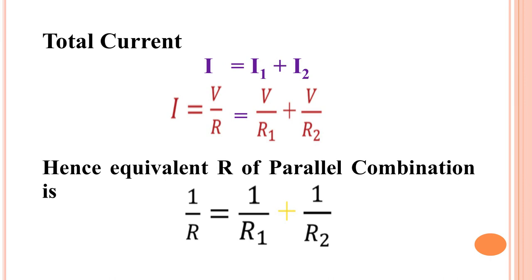To find the equivalent resistance, the total current I = V / R_equivalent, and since I = I1 + I2, where I1 = V/R1 and I2 = V/R2, we get: V/R = V/R1 + V/R2. Therefore, 1/R = 1/R1 + 1/R2 for the equivalent resistance of the parallel combination.